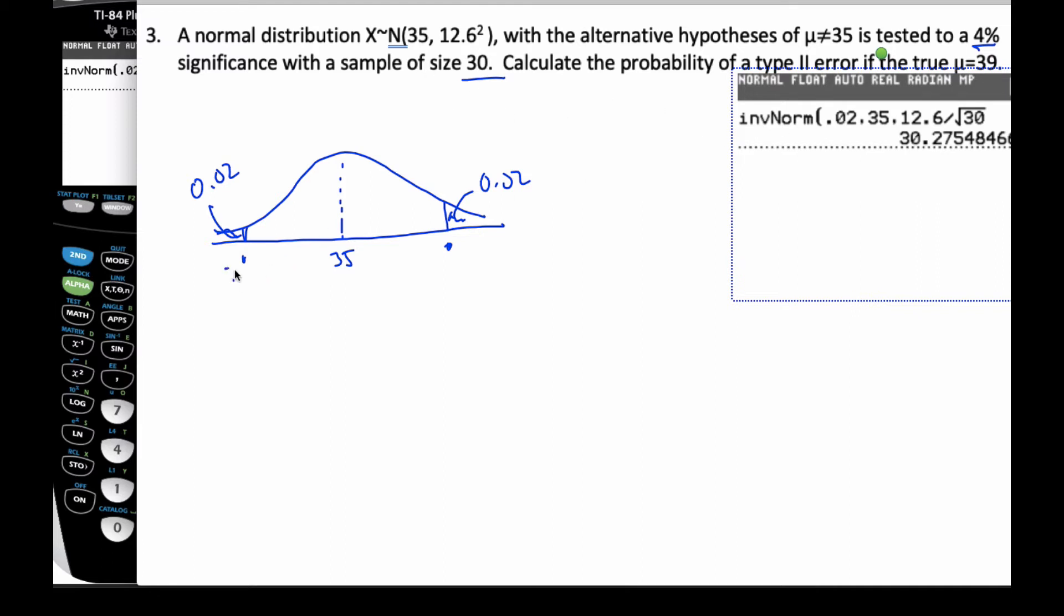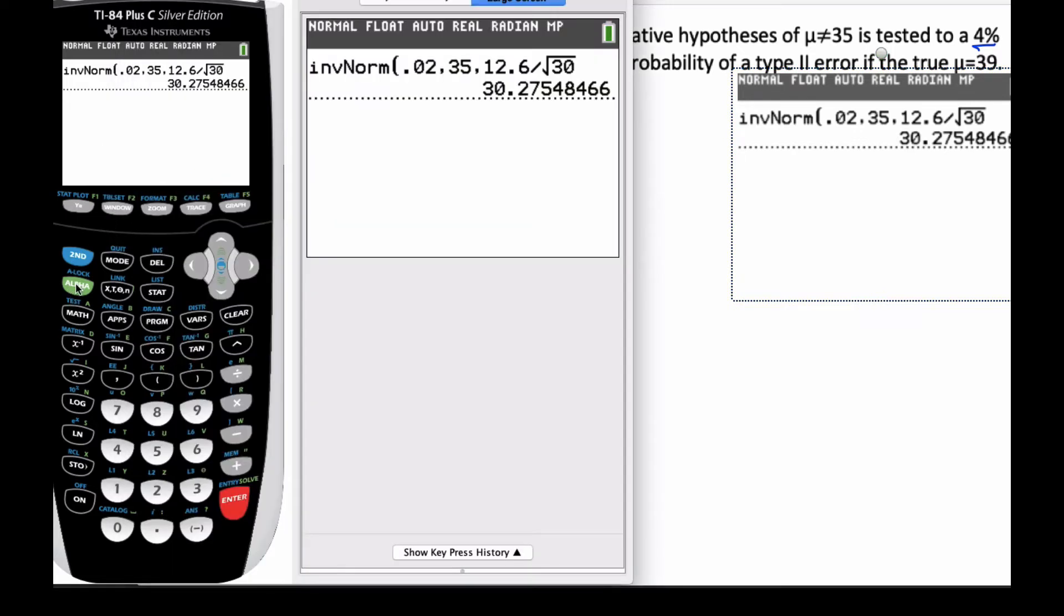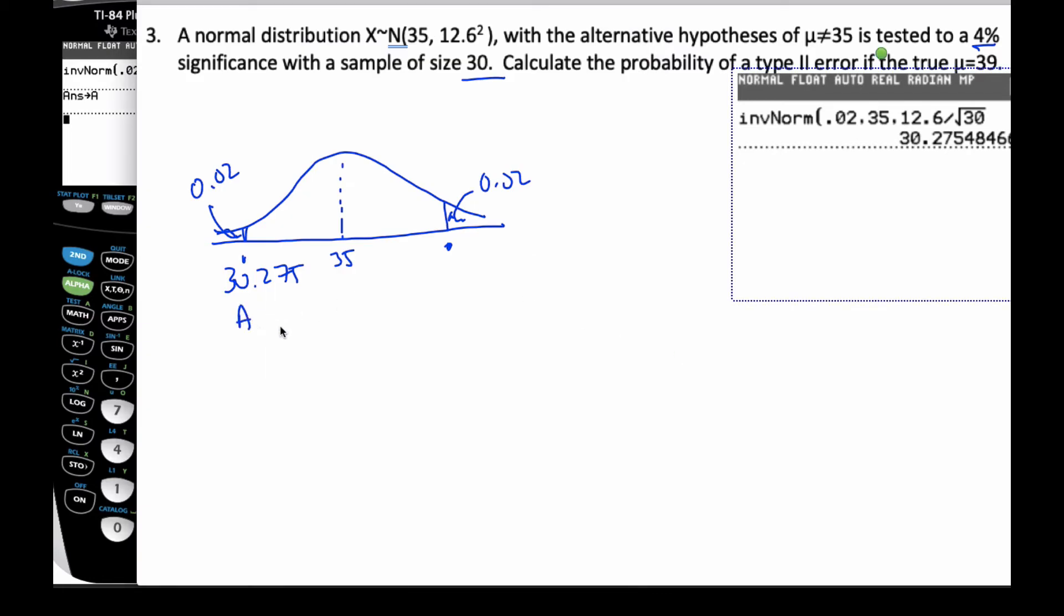So this value here is 30.275, and I'm going to store that in alpha A. This is my A value.